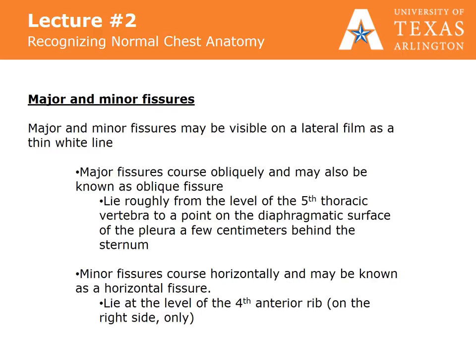Major and minor fissures may be visible on a lateral film as a thin white line. Major fissures course obliquely and are then called oblique fissures. They lie roughly from the level of the fifth thoracic vertebrae to a point on the diaphragmatic surface of the pleura a few centimeters behind the sternum. Minor fissures course horizontally and may be known as horizontal fissures. They lie at the level of the fourth anterior rib on the right side only.